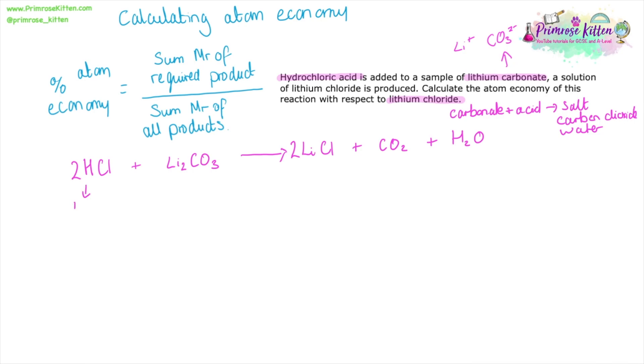When we're working out the atom economy, the first thing we do is work out the mass of everything. So hydrogen has a mass of 1, chlorine has a mass of 35.5. If we add those together, we get the mass of hydrochloric acid at 36.5. And we have 2 of these in the equation, so we need to times that by 2, giving us a total mass of all of the hydrochloric acid that is involved in this reaction as 73. Lithium carbonate: lithium has a mass of 7, and there are 2 of them in the lithium carbonate, so that gives us a total of 14.